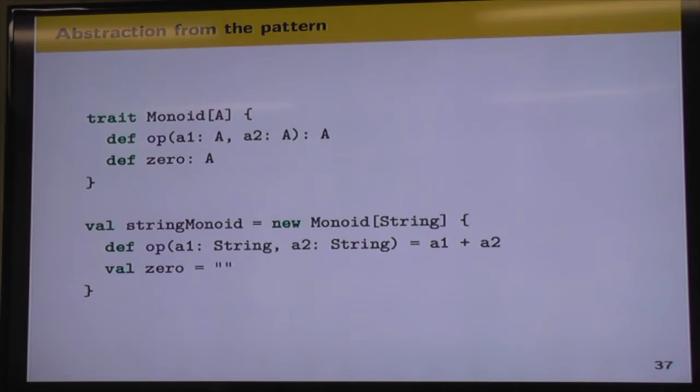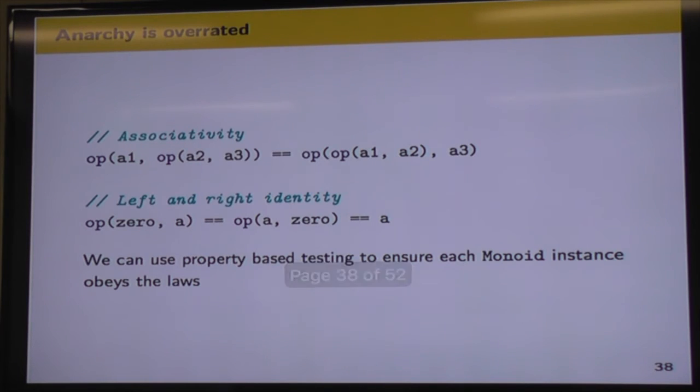So we've defined the two things that make a monoid, our binary associative operation and our identity, and now we're just going to put them in a Scala trait. So there it is. And we've also got an example of our string concatenation monoid that creates a new instance of that monoid trait.